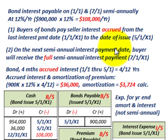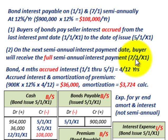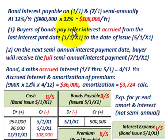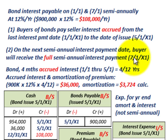On the next semi-annual interest payment date of 7-1, the buyer will receive the full semi-annual interest payment. Even though the buyer had to pay the seller for the first four months of interest, the buyer receives the full interest payment on 7-1. That's the key mechanic when issuing bonds between interest payment dates.